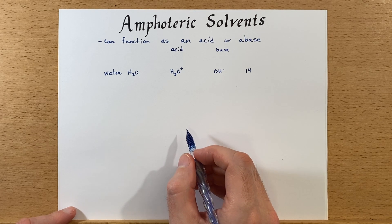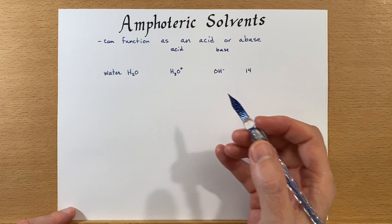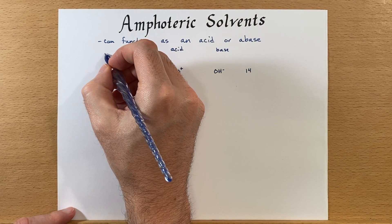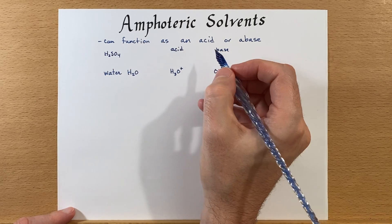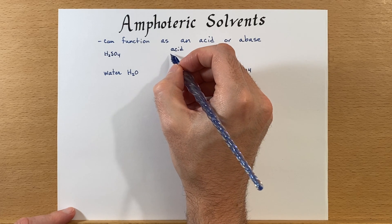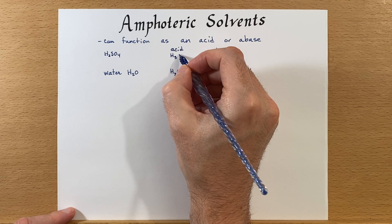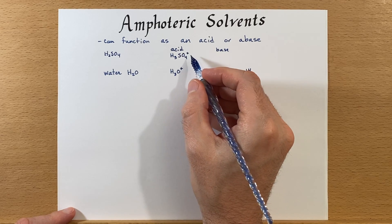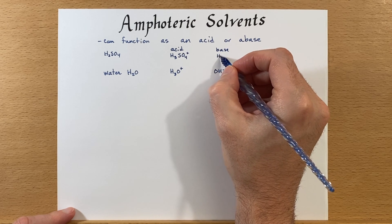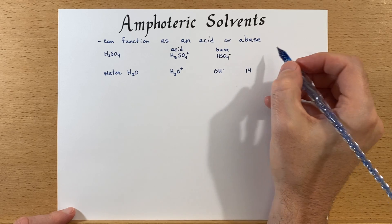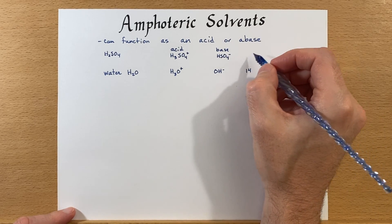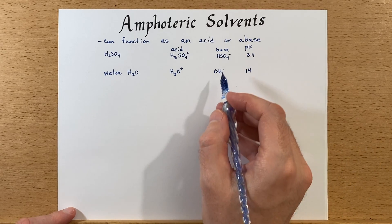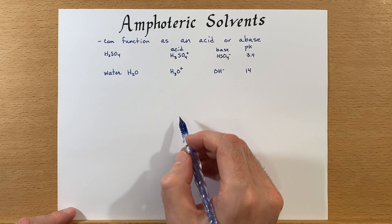Water is not the only amphoteric solvent — there are several others. One that might be a little surprising is sulfuric acid. You can protonate sulfuric acid into H3SO4+, and this is very acidic. Of course, you can also form a base from it. The pK for this is 3.4, so it's a lot stronger on the dissociation.